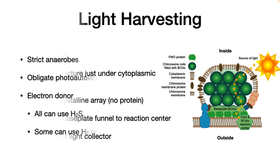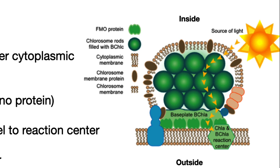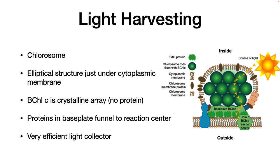Light harvesting. Their light harvesting complex is unusual. It is an elliptical structure just under the cytoplasmic membrane. Inside the light harvesting complex is a crystalline array of bacteriochlorophyll C that is surrounded by lipid membrane with no protein. This array is highly efficient at collecting light and funneling it to the base plate, which then passes the photons on to the reaction center. The chlorosome is a highly efficient light collector and green bacteria specialize in living in environments of very low light, yet still being able to photosynthesize. The reaction center.